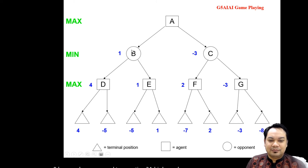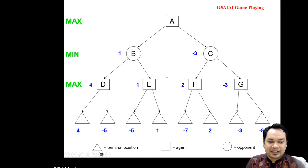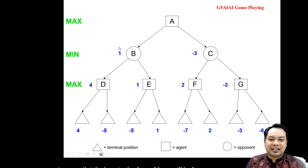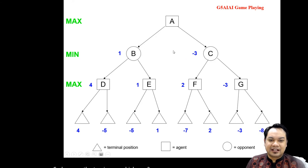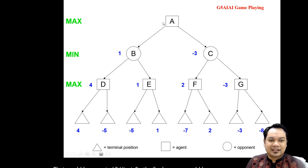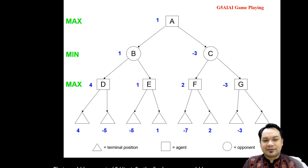Now we look at the next level: min. Min means you select the lowest value. For 4 and 1, lower is 1. For 2 and negative 3, lower is negative 3. Between 1 and negative 3 at the top level, which value rises to the top? Because the top is max, the highest value is selected, which is 1. So the final answer is 1.